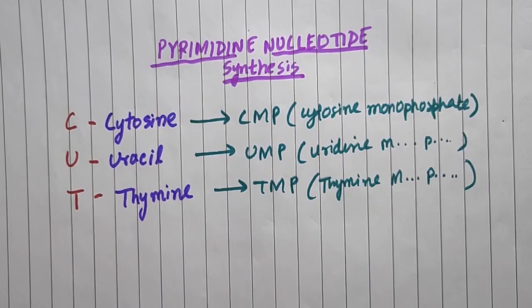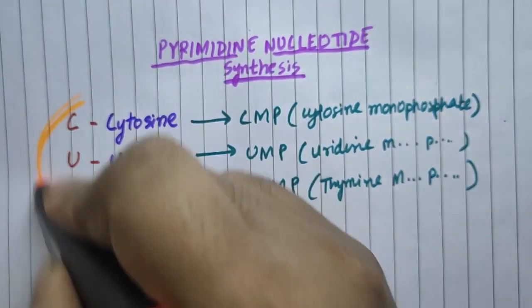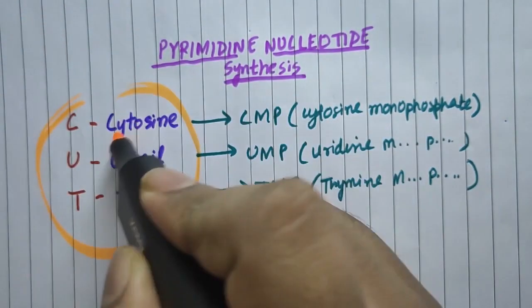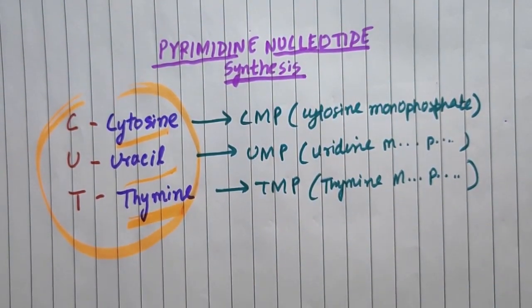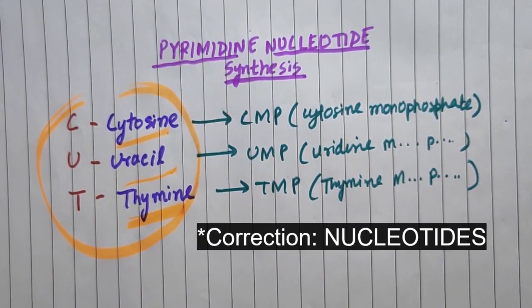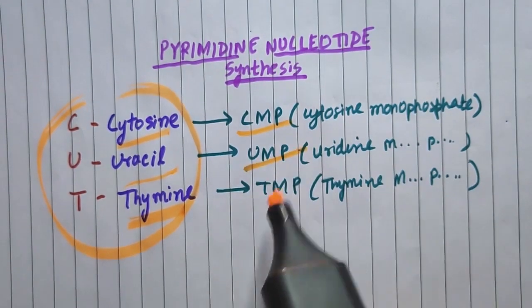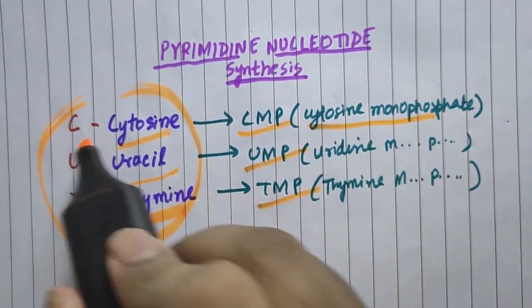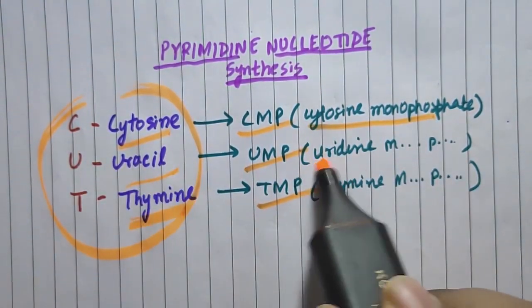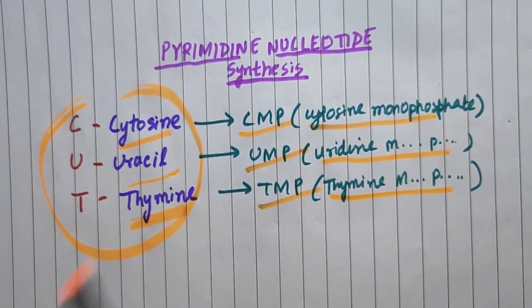The nitrogenous bases under Pyrimidine are CUT — that is cytosine, uracil and thymine — and their corresponding nucleotides are respectively CMP, UMP and TMP: cytosine monophosphate for cytosine, uridine monophosphate for uracil, and thymine monophosphate for thymine.